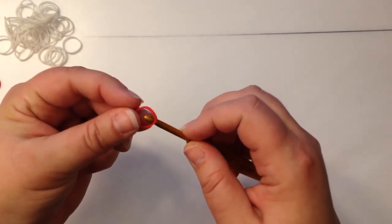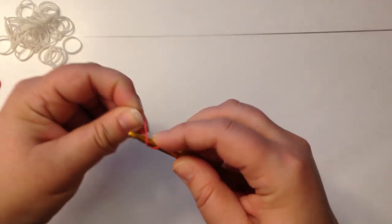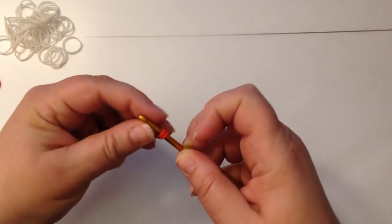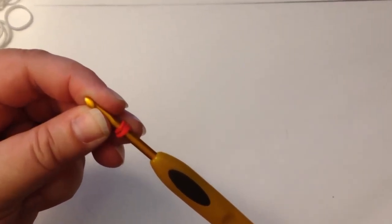So a chain, you're going to take a single band, wrap it around your hook once and twice, and I'm going to zoom in so you can see really clearly what I'm doing.